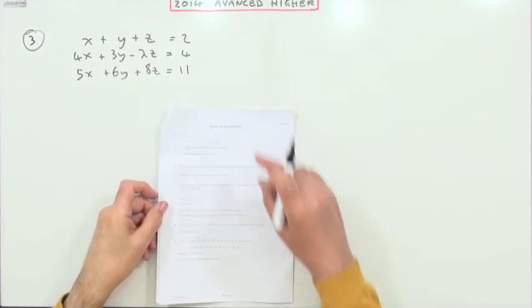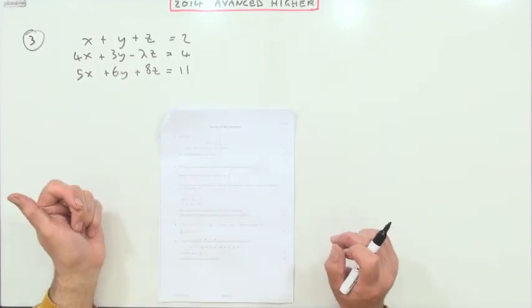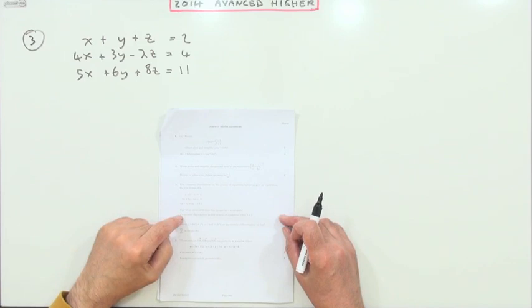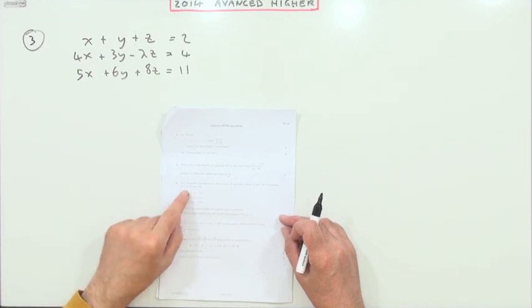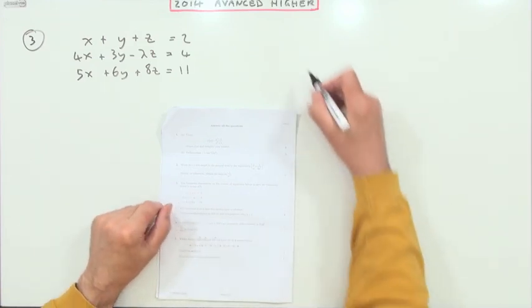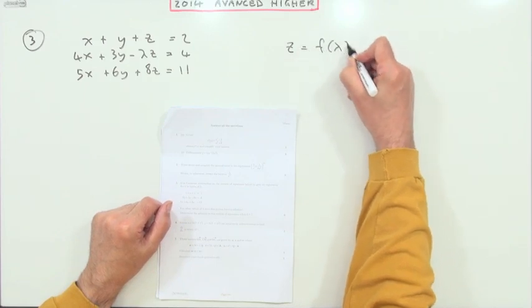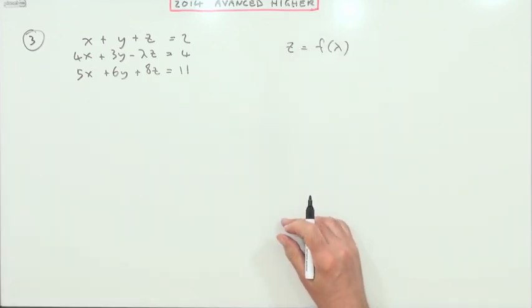Number three then from the 2014 advanced higher, Gaussian elimination. Here's a system of equations, three equations, and it says express z in terms of lambda. So you want to write z as some function or other of lambda.